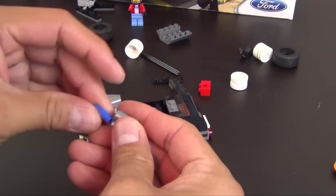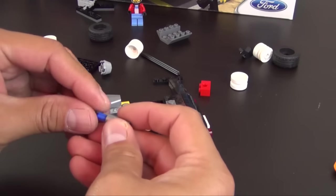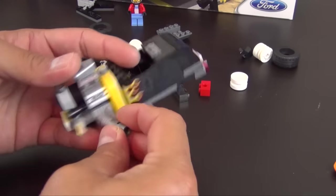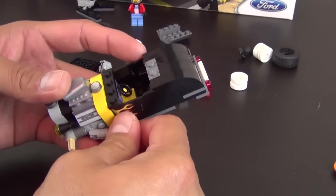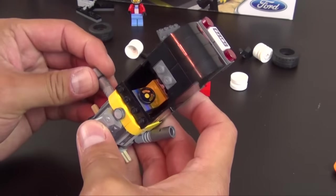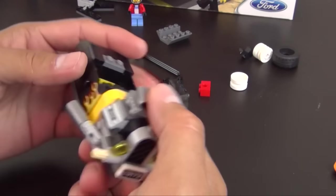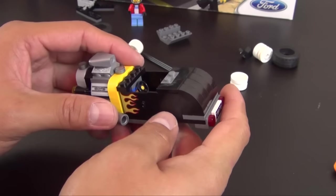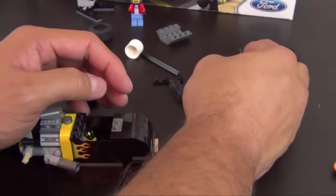Next we have two of these large exhaust ports, there we go, on each side of the kind of engine block area. They're really large and over exaggerated.